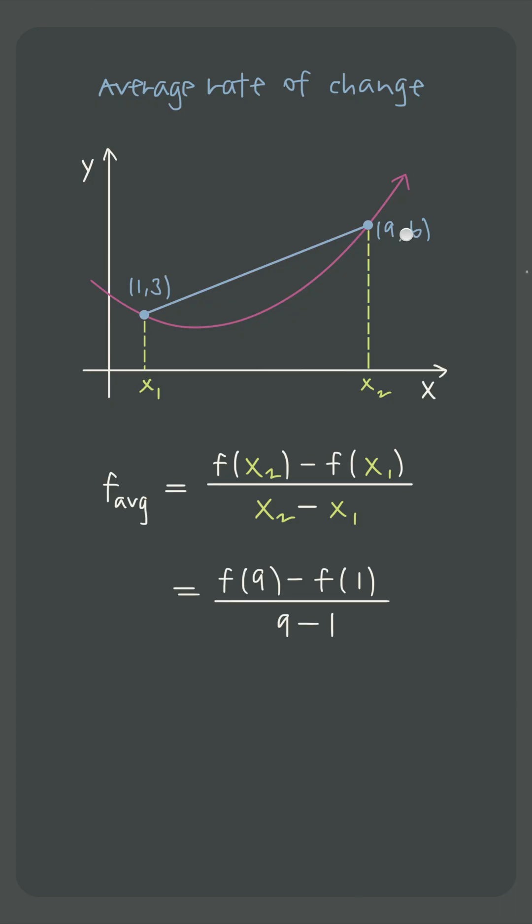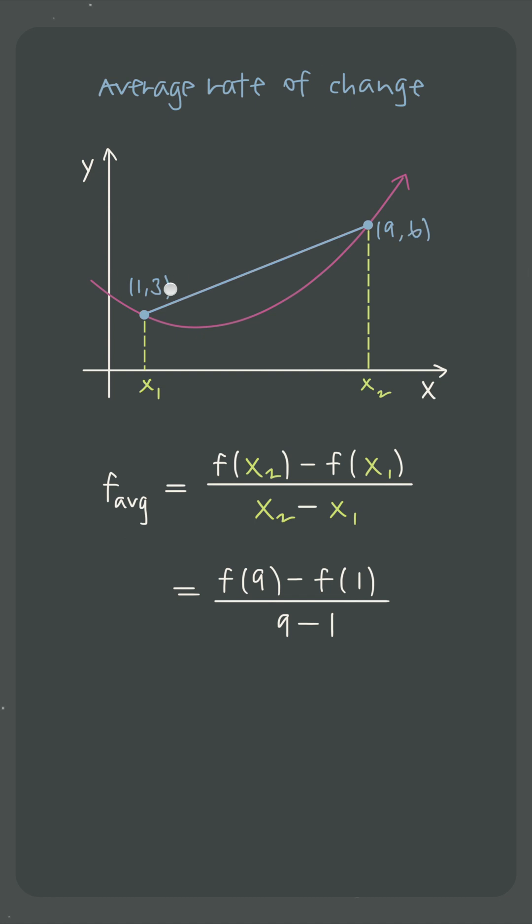This point tells us that the function's value is 6 when x equals 9, and this point tells us that the function's value is 3 when x equals 1. So for our formula, we get 6 minus 3 divided by 9 minus 1, which we know then is 3 over 8.